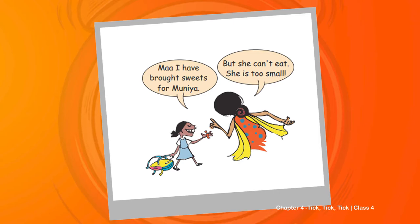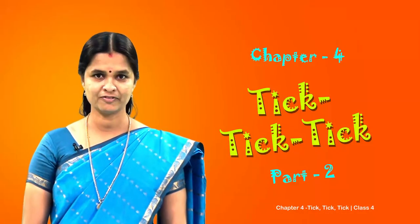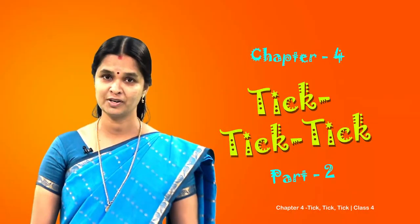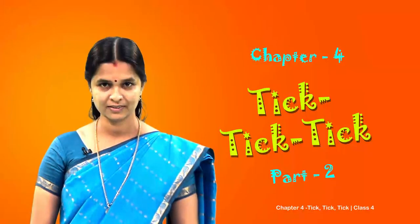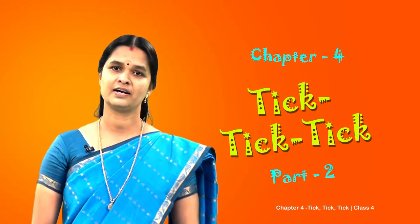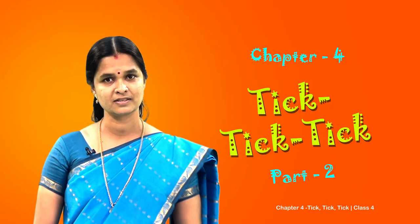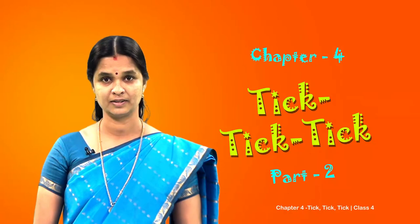Now what is her mother telling? Let us see. 'No, she can't eat, she's too small.' We know that small children cannot eat everything that we eat. It will be fun to know when they start doing all these things, isn't it? So Rani decided to write all these activities of her sister in her diary.